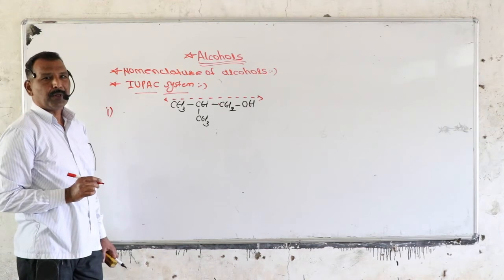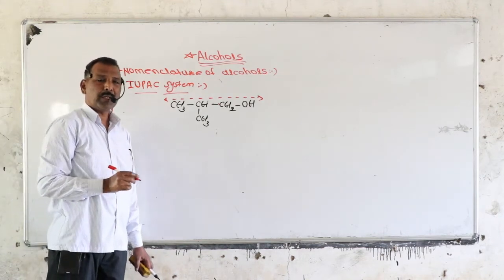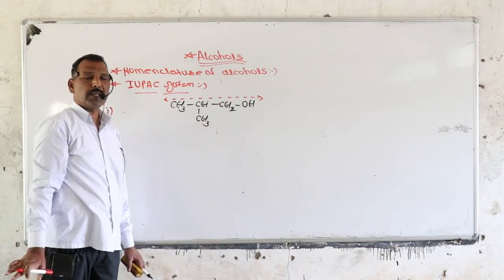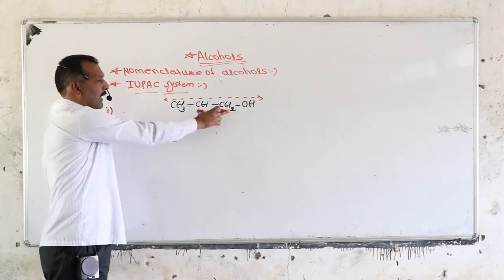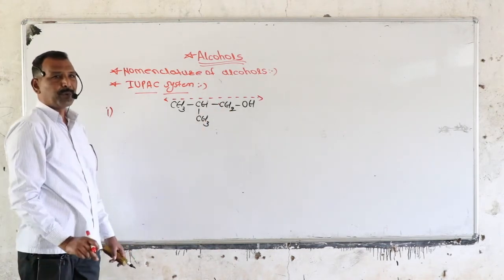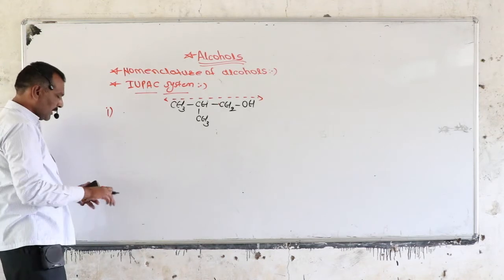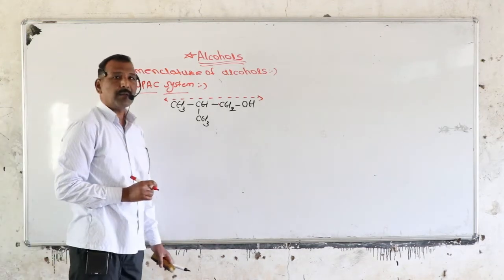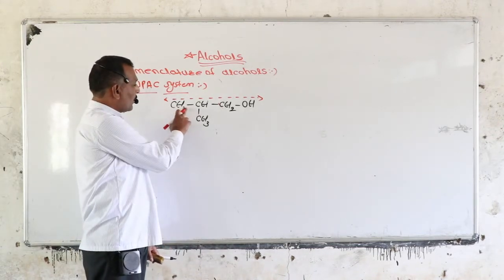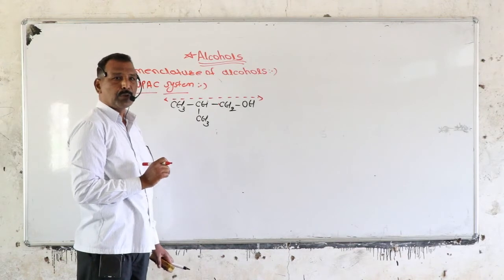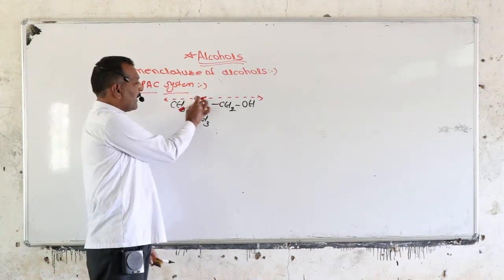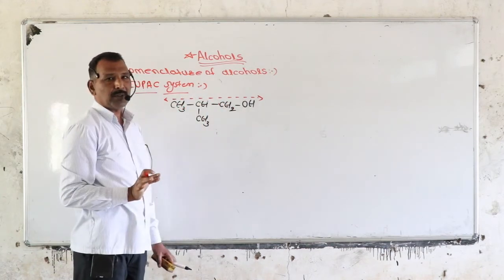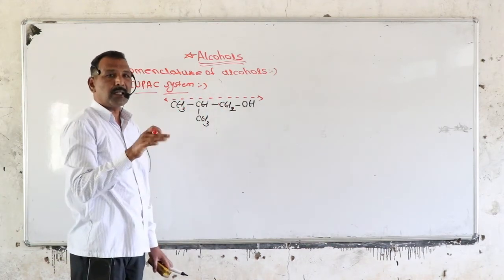Second rule: we have to count the number of carbon atoms in that longest chain — also called the parent chain — and write the corresponding name of the alkane. In this structure there are three carbon atoms in the parent chain, so the corresponding alkane is propane. So propane is the parent.